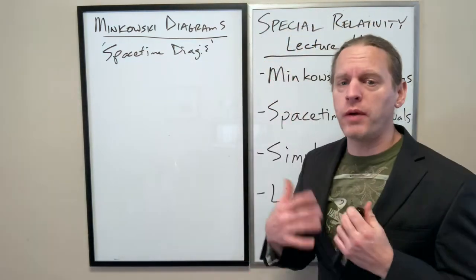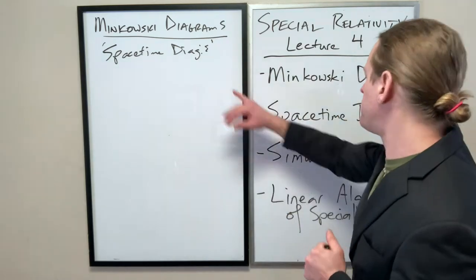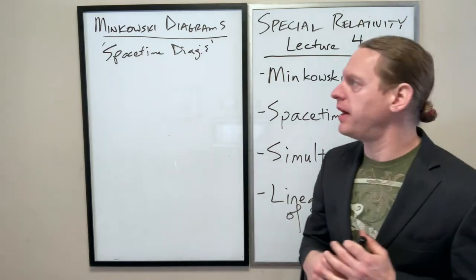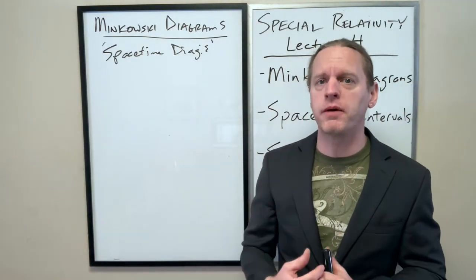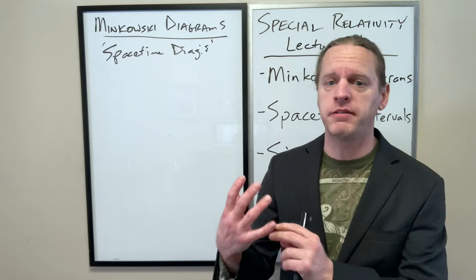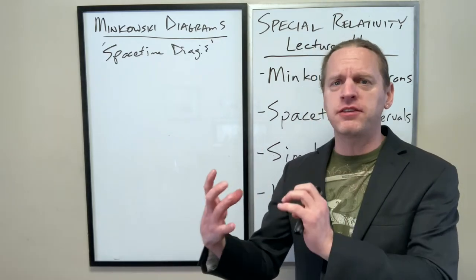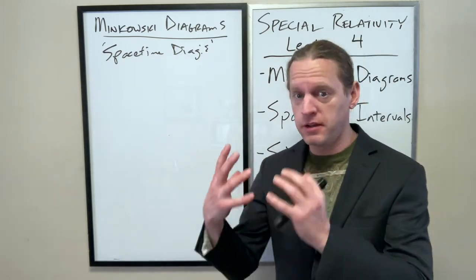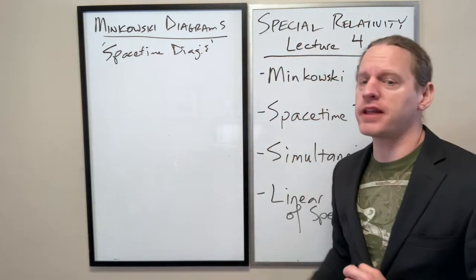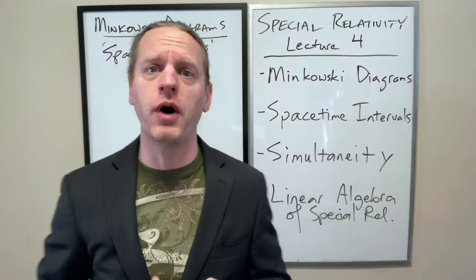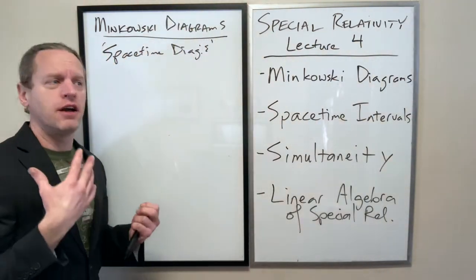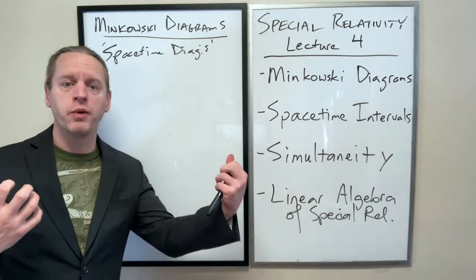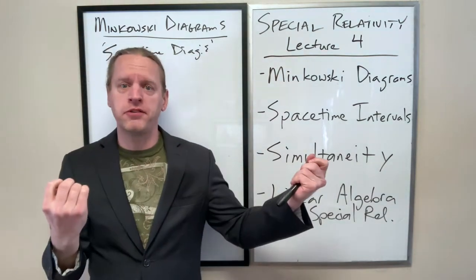Basically what Minkowski did — and we'll talk more once we discuss the linear algebra of spacetime — he was able to incorporate the transformations of relativity into a fairly straightforward linear algebra, like matrix and row-vector, column-vector-based analysis. These diagrams are known for him because it's a visual way of representing the separation between not just points in spacetime, but what we call events.